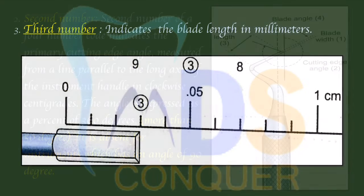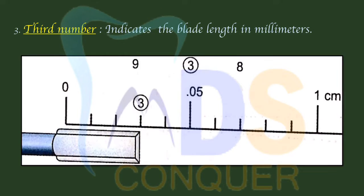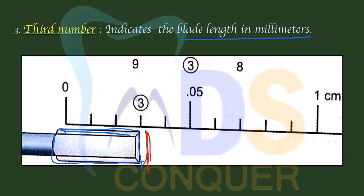The third number represents the blade length in millimeters. Previously, the first number measured the width of the blade — here, the third number measures the length of the blade.